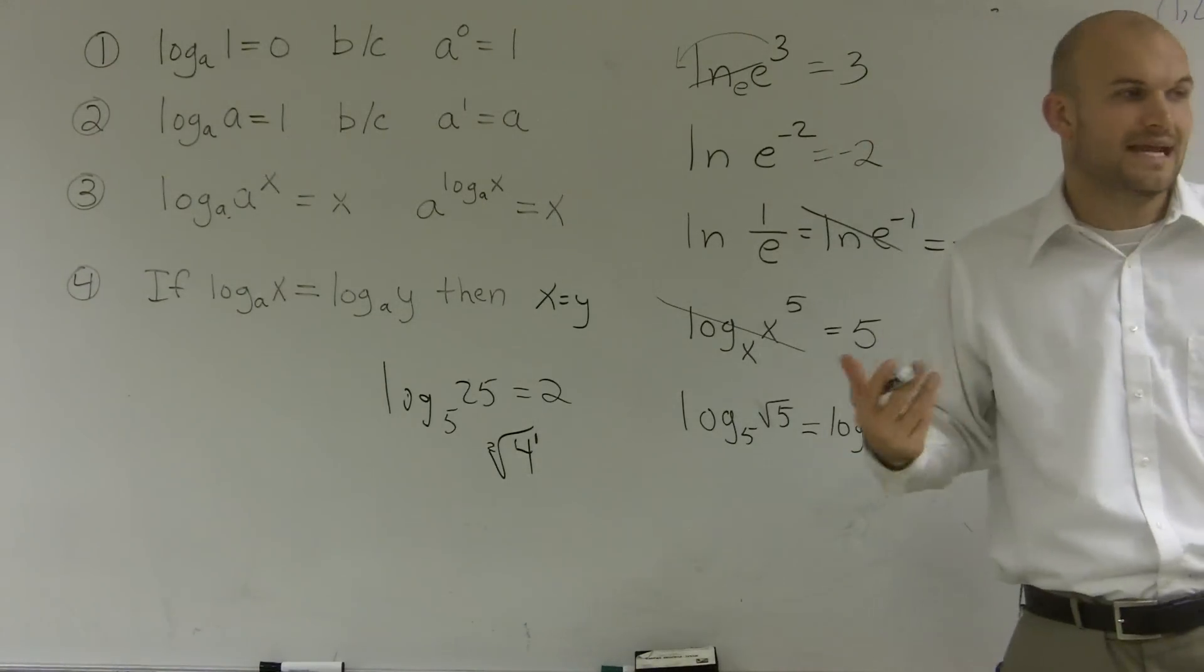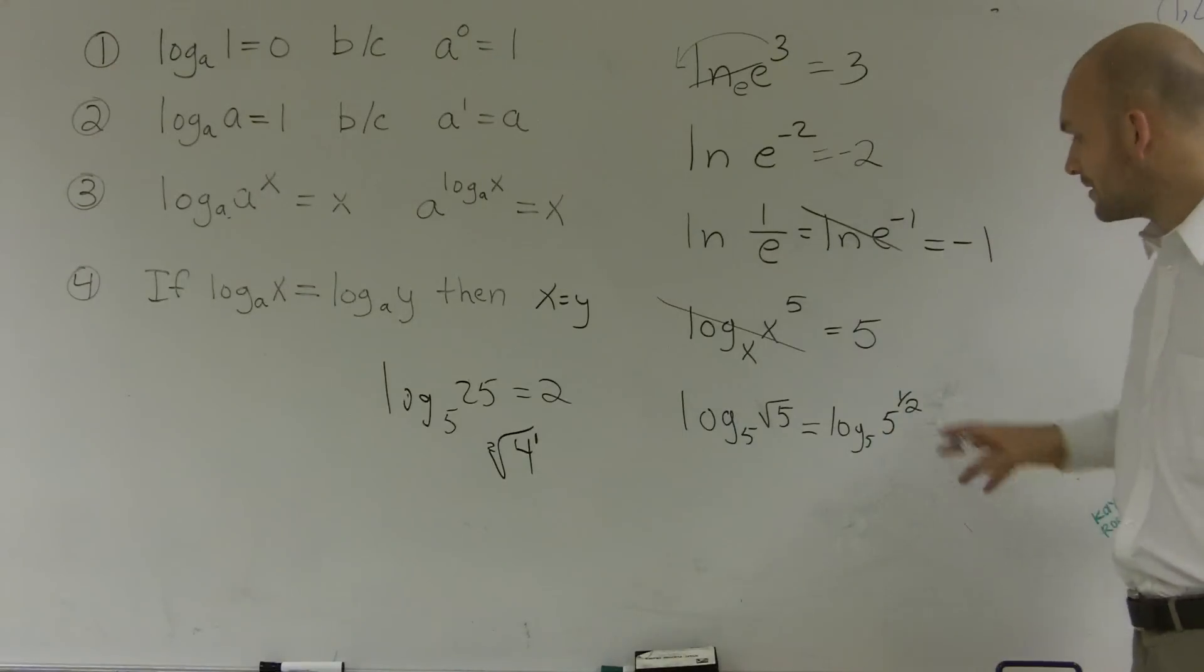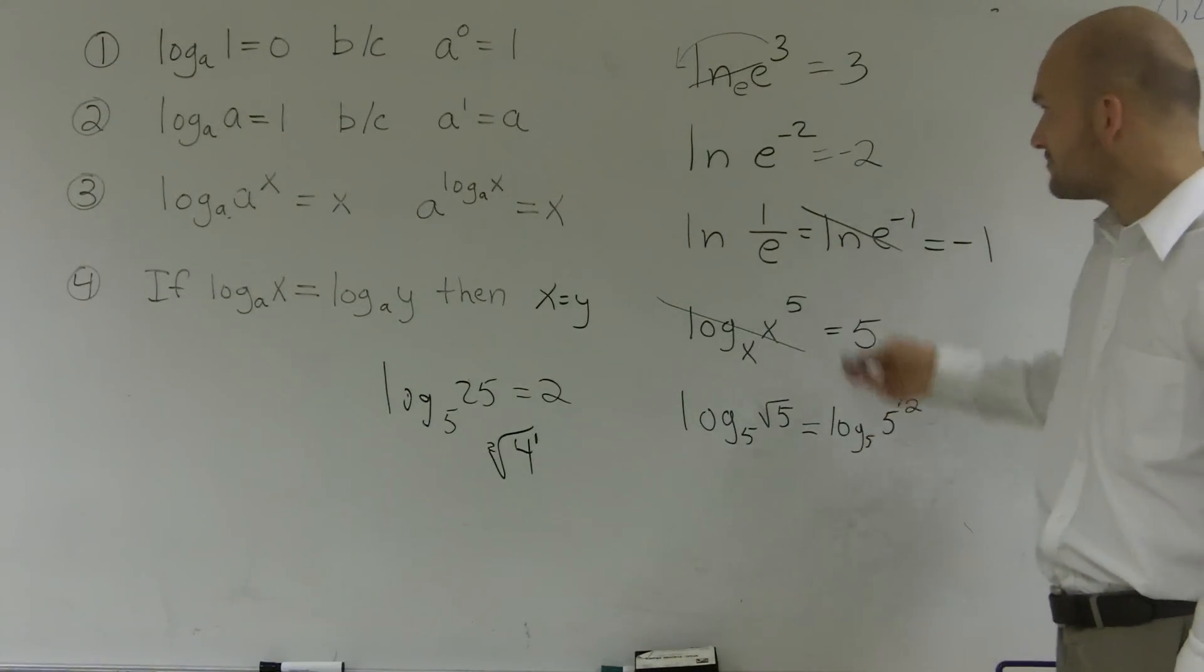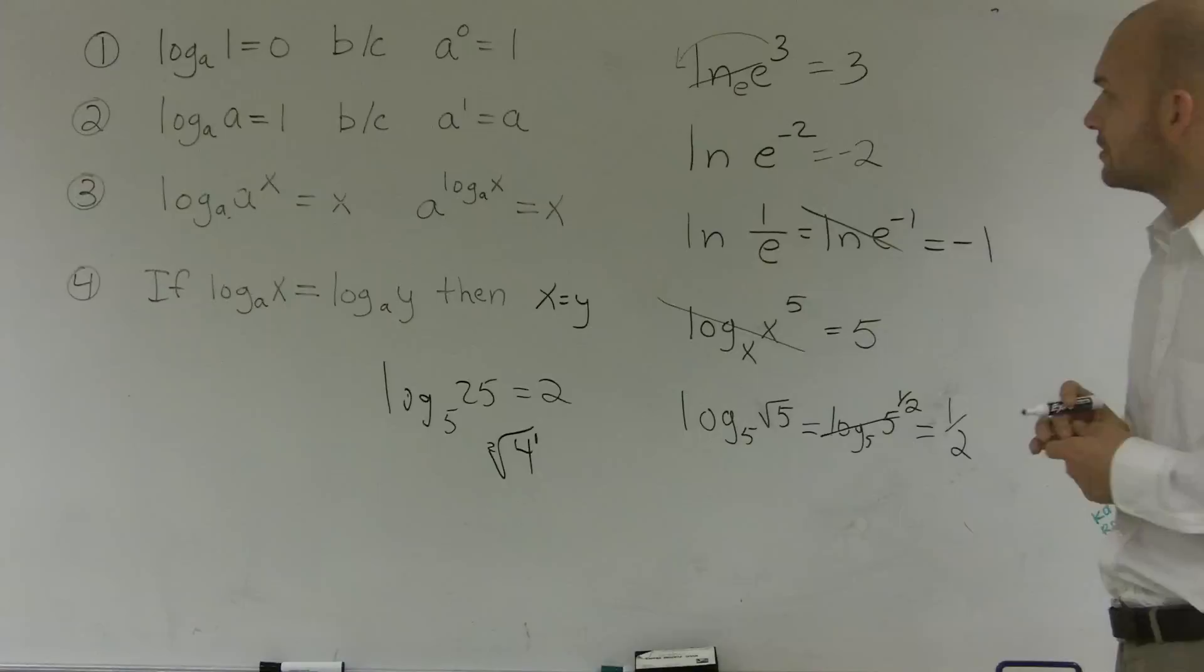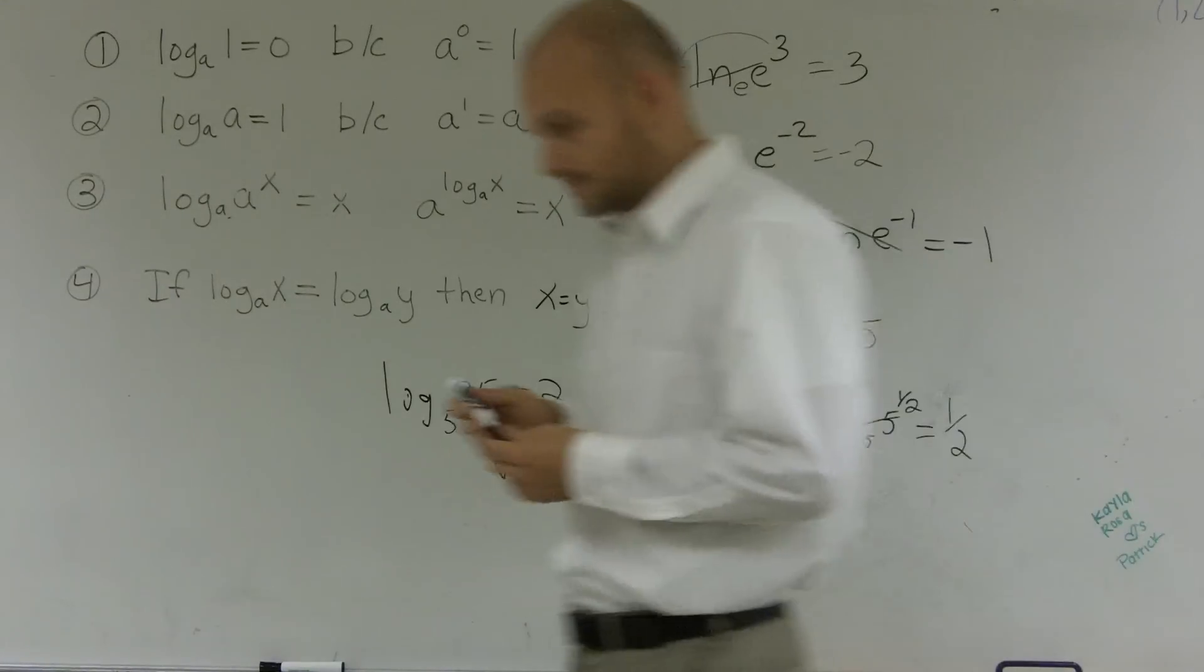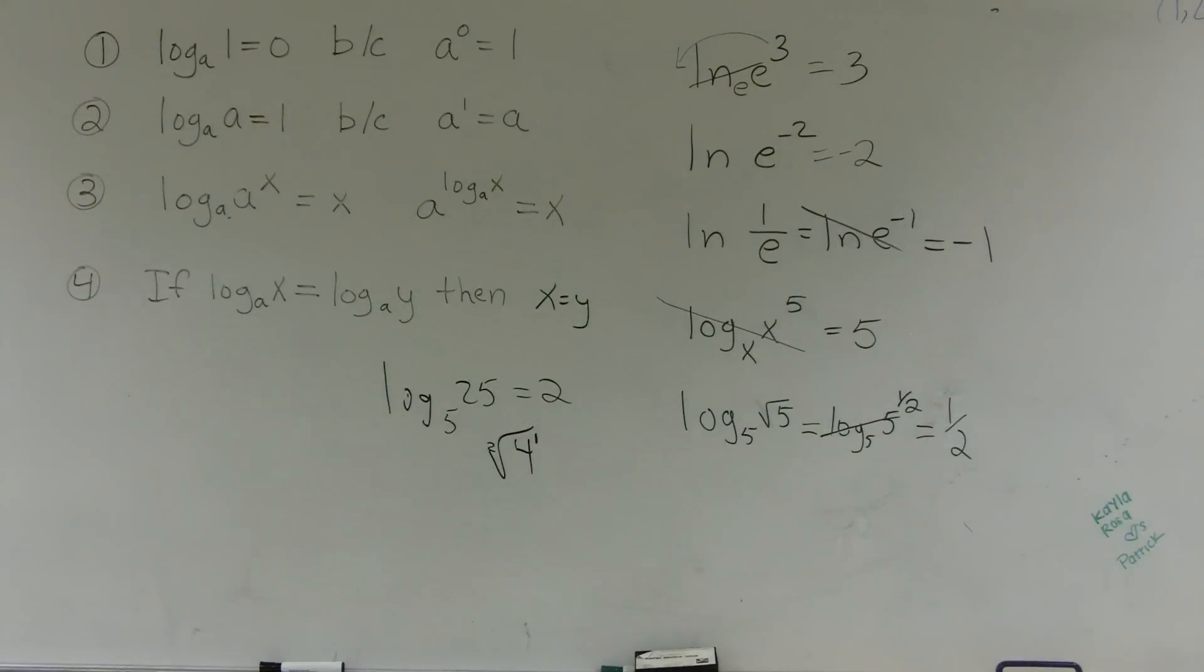The square root of 5 is the same as 5 raised to the 1/2 power. Now I have 1/2 as my exponent. From my previous problems, this will cancel out, and I'm left with 1/2. That's how you use the properties of logarithms to evaluate a logarithm.